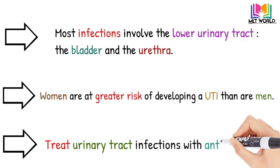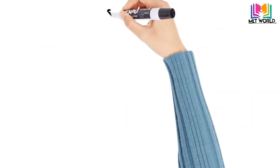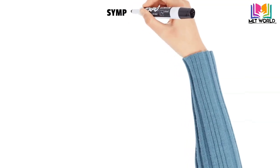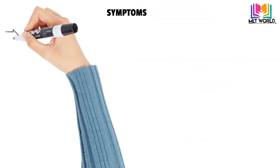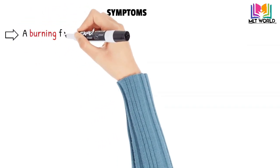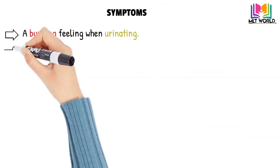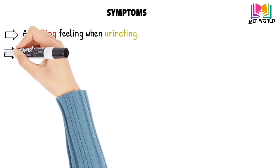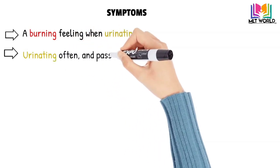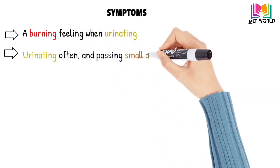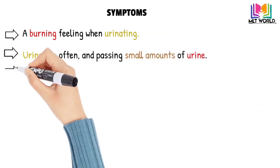Now I will discuss general symptoms that both males and females can have. First is a burning feeling when urinating — you will feel burning and sometimes itching. Urination will be more frequent than normal, and when passing urine, you will feel like only small amounts are coming again and again.